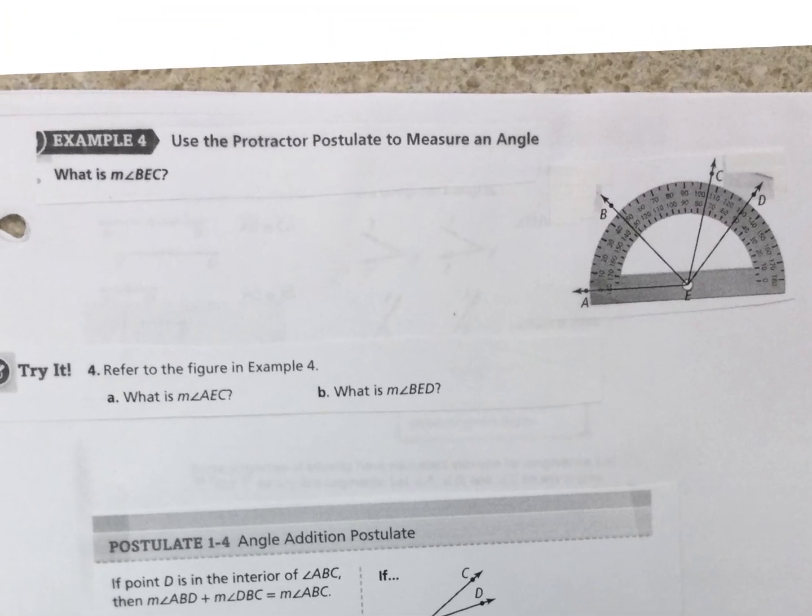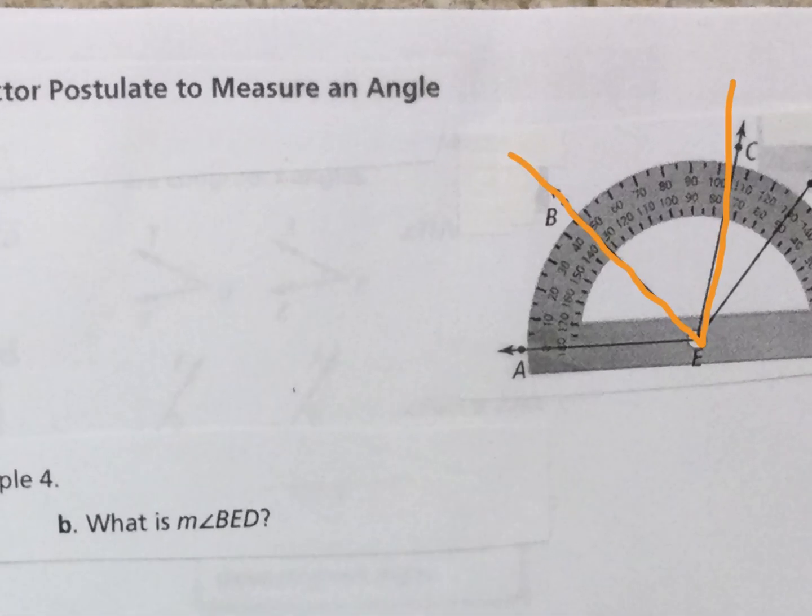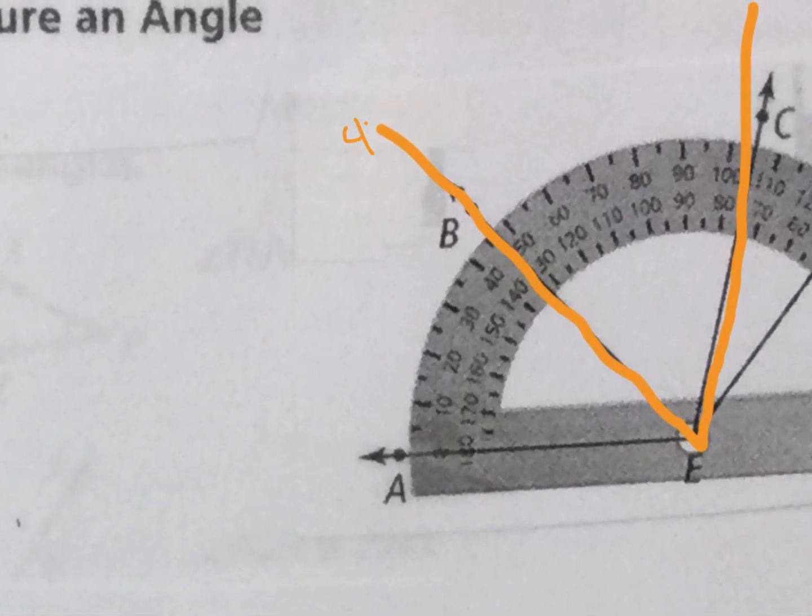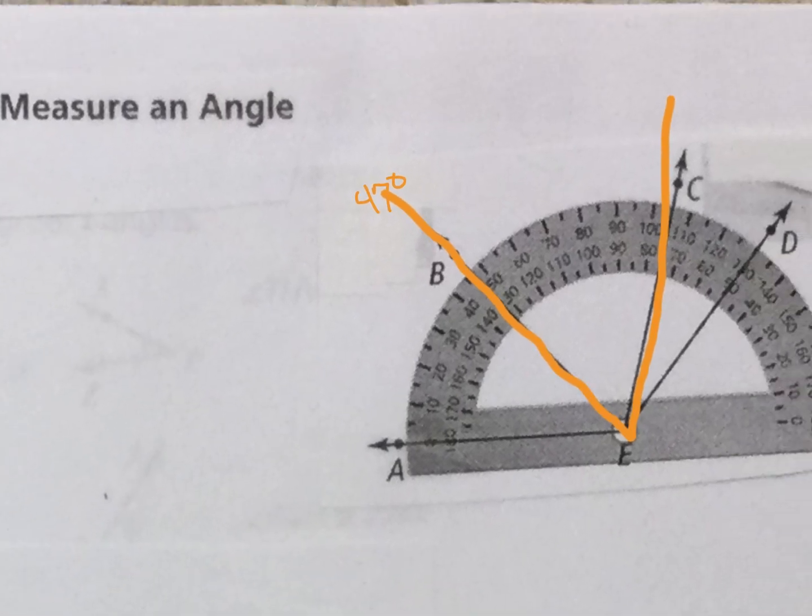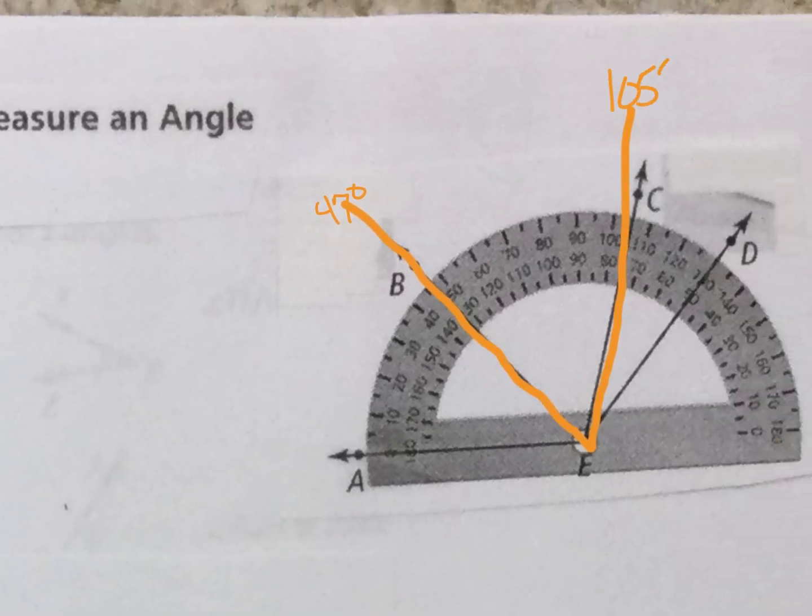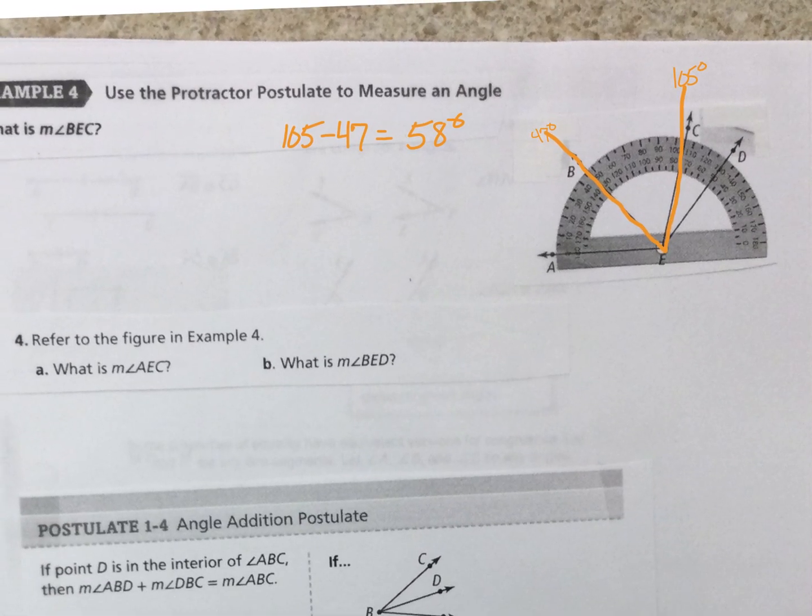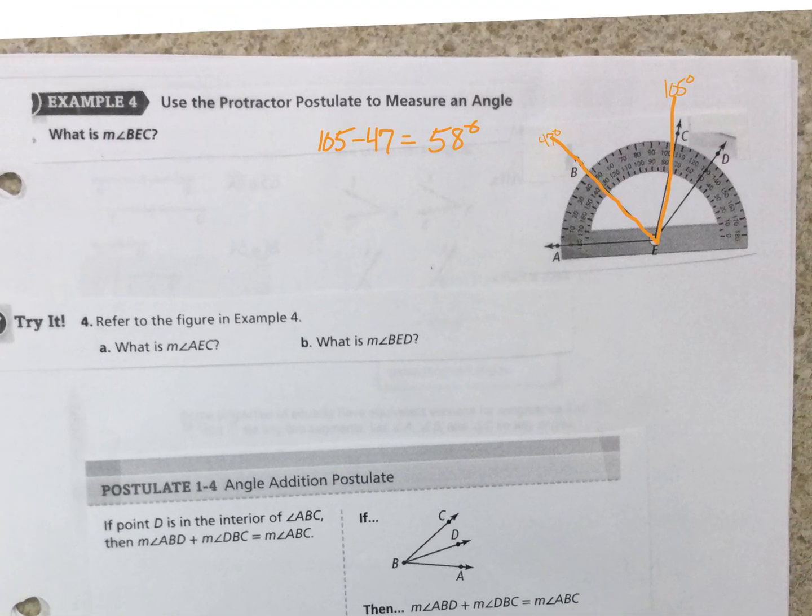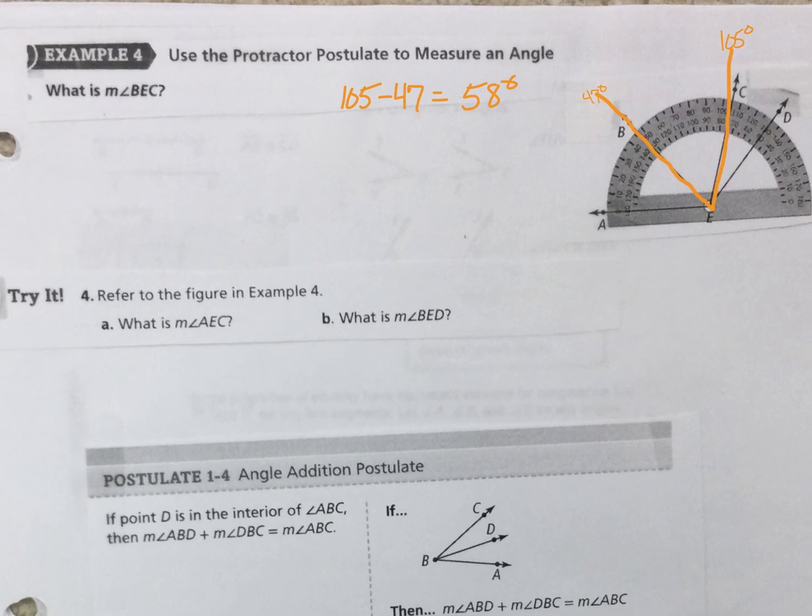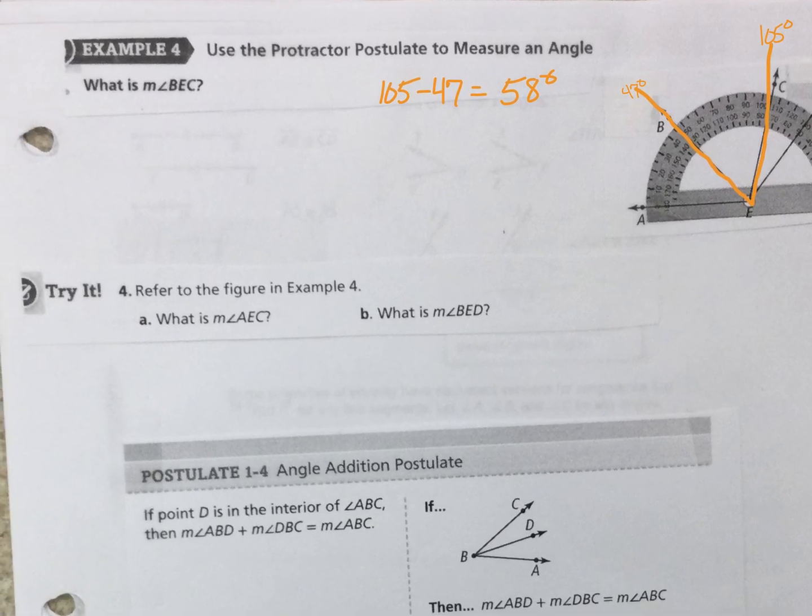Okay, the next page. What is angle BEC? So BEC, and I can see here that this was about 47 and this one is about 105. So 105 minus 47 gives me 58 degrees. See if you can do number four A and B and find those.